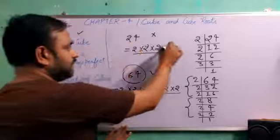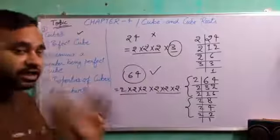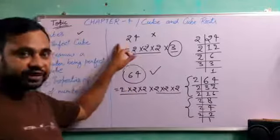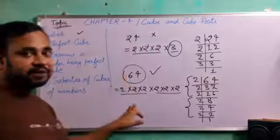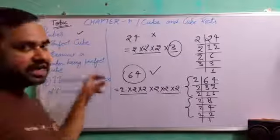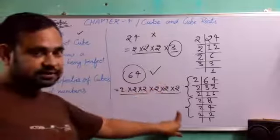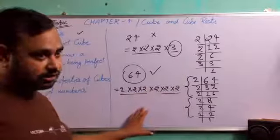Here, in 24, we have got a number 3 that is not 3 times in its prime factorization. So we can say that 24 is not a perfect cube and 64 is a perfect cube. Now we will go to next topic, examine a number being perfect cube. Nothing to understand else, we have done here for this topic also, examine a number being perfect cube.